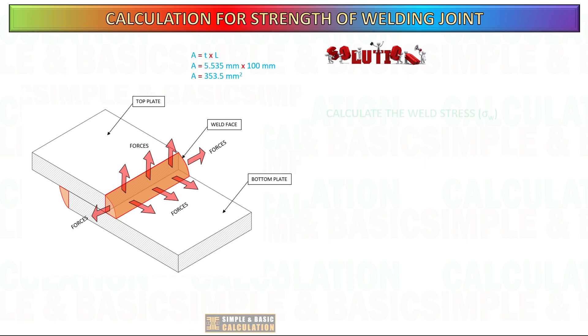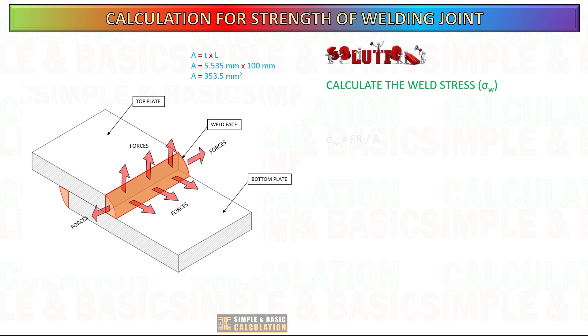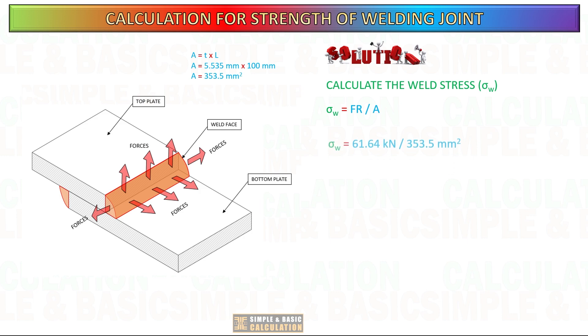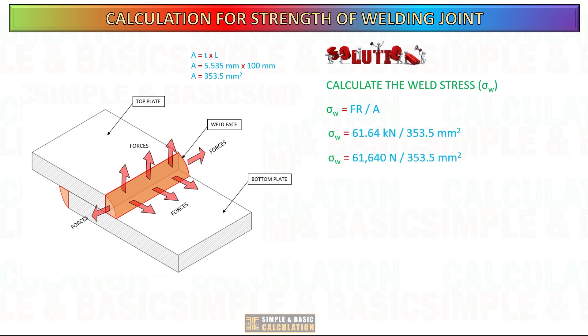Next, calculate the weld stress. The stress on the weld is due to the resultant forces. To get the weld stress, divide the combined resultant force by the throat area.